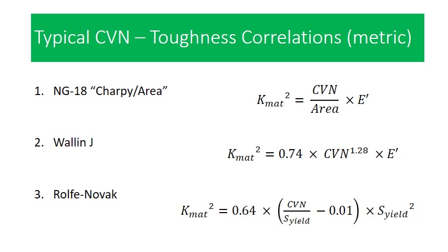We're going to look at three typical Charpy V-notch toughness correlations. I've got these here in metric units, so some of you might be familiar with these equations but with slightly different numbers. Our first correlation was originally derived by the NG18 committee at the Patel Institute in Columbus, Ohio back in the late 60s and early 70s. It's a very simple model where Charpy divided by the area of the Charpy sample is correlated to essentially a J-type integral. If we take that J and multiply it by the modulus of the material, we'll get a K-squared value. I've done all this work in K-squared because that's what we typically put into our log secant models.